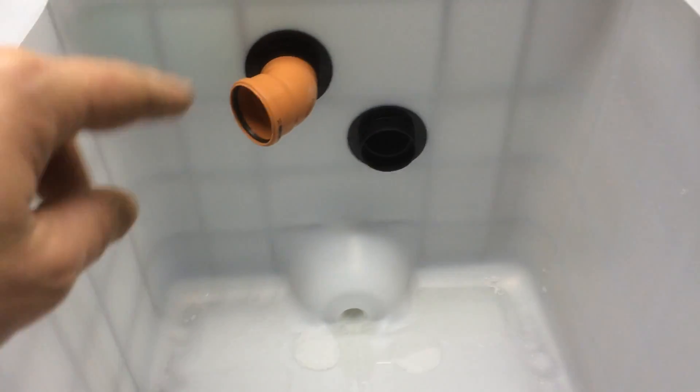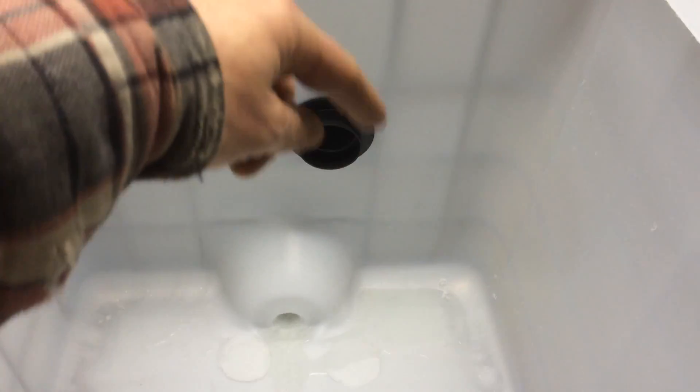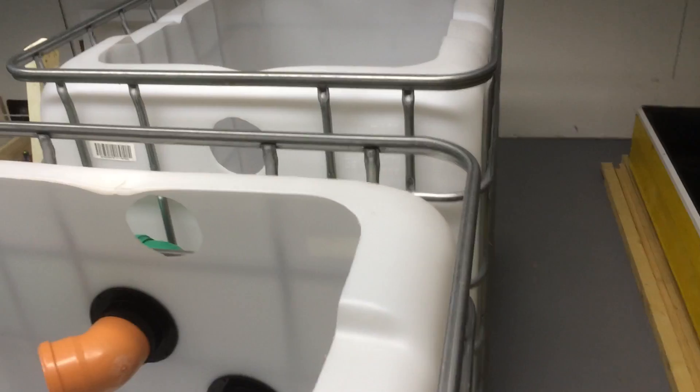This will have one of my drum filters in it. The water will come in here, circulate around and come back to here and there will be a self-cleaning drum filter. That will flow through into the next tank which will be the biofilter.